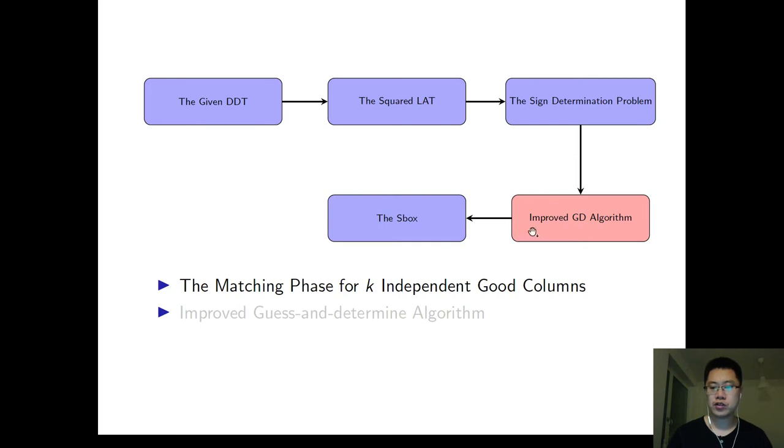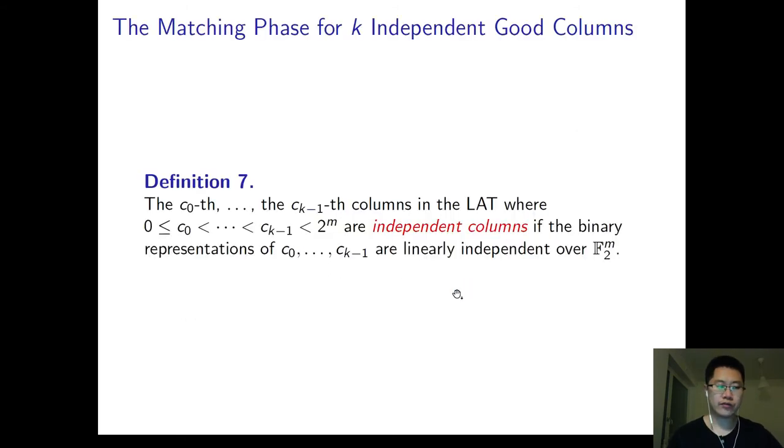Before we introduce the improved GD algorithm, we need to describe the matching phase for k-independent good columns. Suppose that we have solved the sign determination problem for k-independent good columns. It means that we have already had some candidates for the k-columns of the LAT. So we need to find the right combination which matches the real LAT.